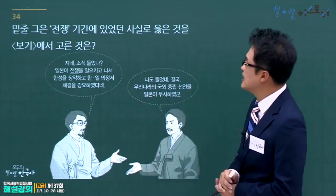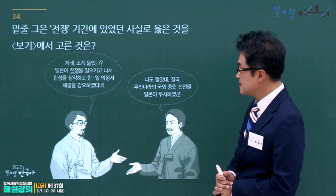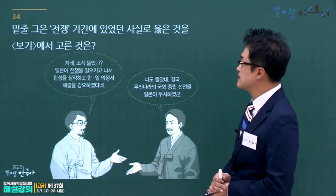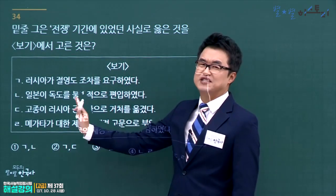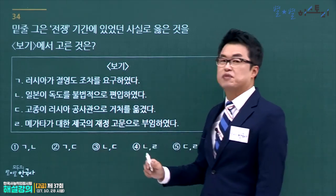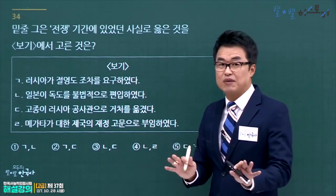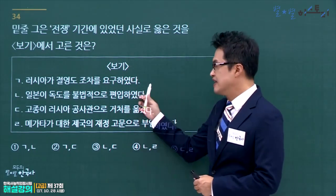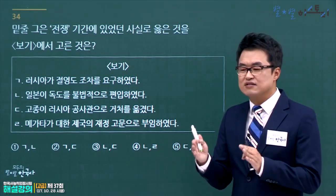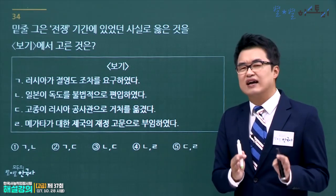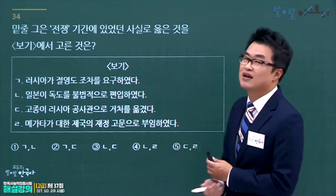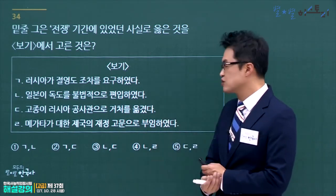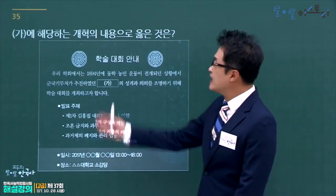한일의정서가 체결된 러일전쟁 기간에 있었던 사실을 고릅니다. 러시아의 절영도 조차 요구 저지는 독립협회와 관련된 이전 사건이고, 고종의 러시아 공사관 이어는 아관파천으로 훨씬 이전입니다. 러일전쟁 과정에서 한일의정서와 1차 한일협약이 체결되었고, 1차 한일협약에서 재정고문 메가타와 외교고문 스티븐스가 파견되었습니다. 일본이 독도를 불법 편입한 것도 이 시기입니다. 정답은 4번입니다.